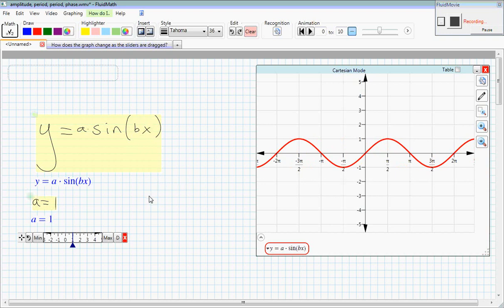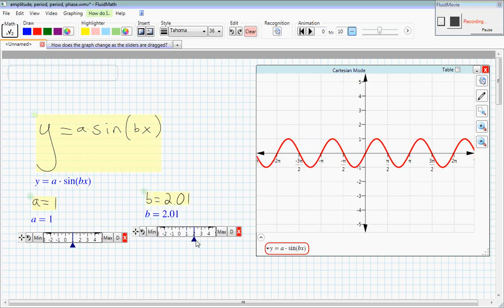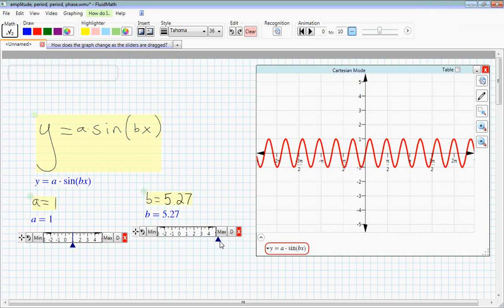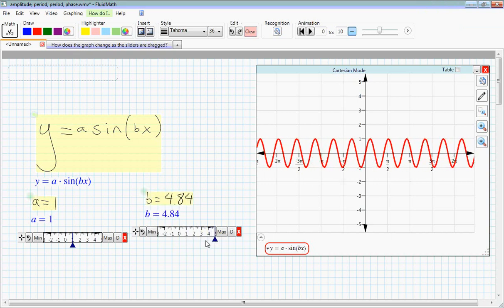So let's do the same thing again. We'll replace that with a variable, a parameter. We'll assign it initially a value of 1, and then let's just drag this. So as the value of b goes up and down, we see something we saw in the beginning again, that the graph stretches horizontally.